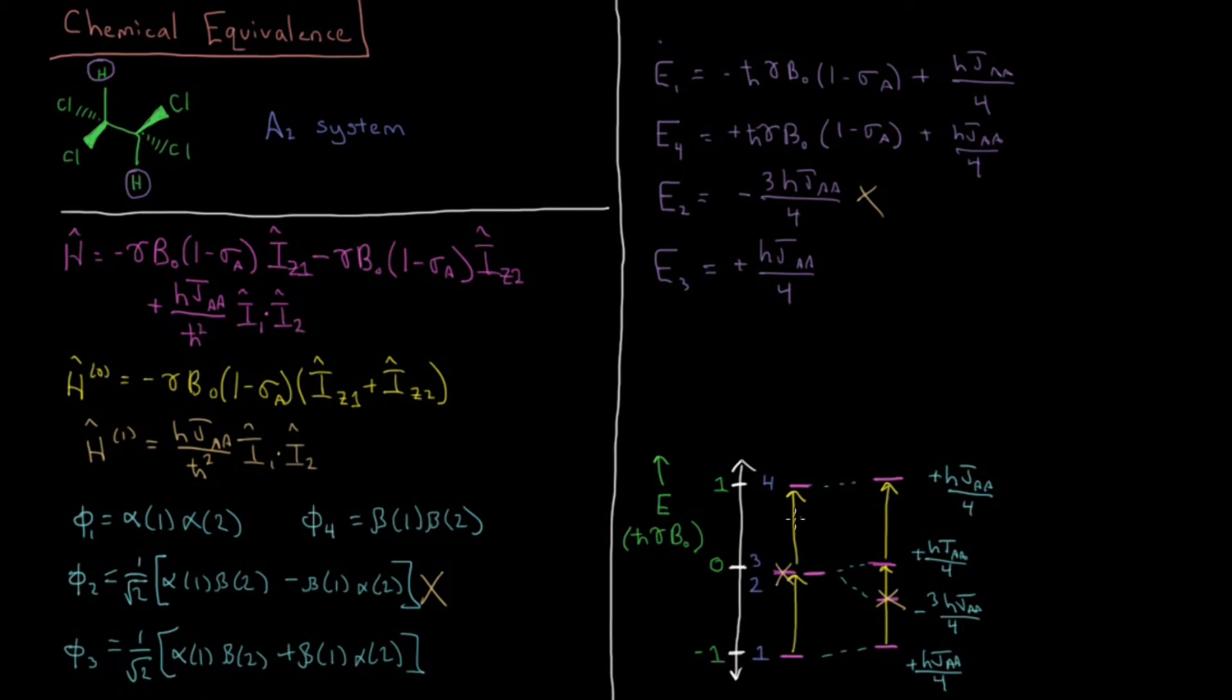Okay. So this gives us our frequencies for these absorptions, nu 1,3, which is equal to E3 minus E1 over H. Delta E equals H nu equals gamma B naught times 1 minus sigma A over 2 pi. And if you go through and do all the substitutions here in terms of what B naught is and all those things, what you end up with is the spectrometer frequency nu naught times 1 minus sigma A. So you end up with the same frequency of absorption you would have got if these two were not coupled.